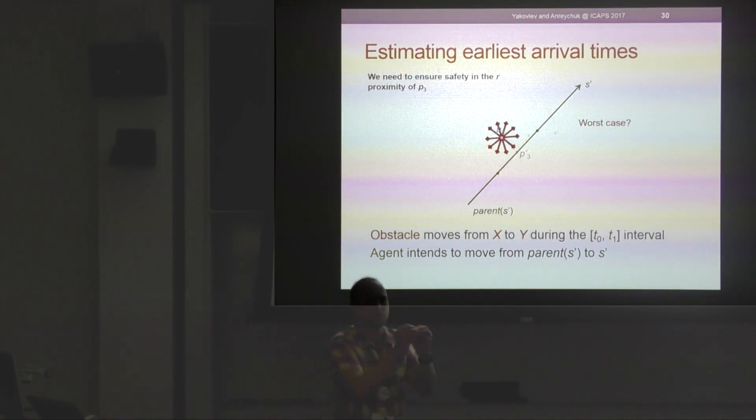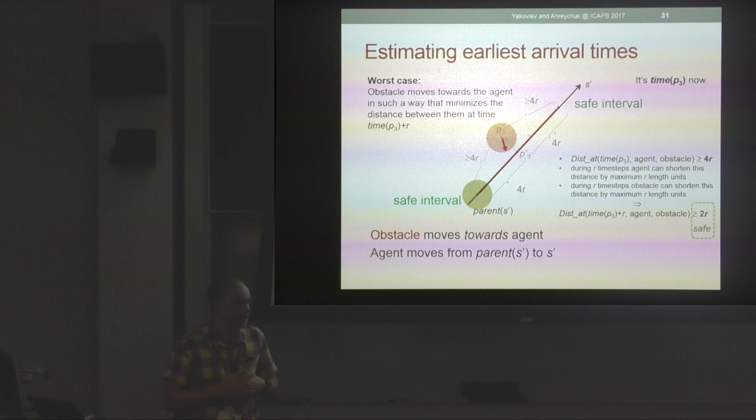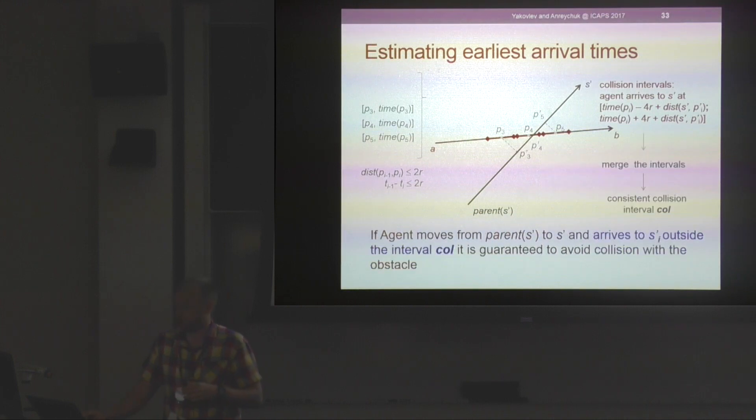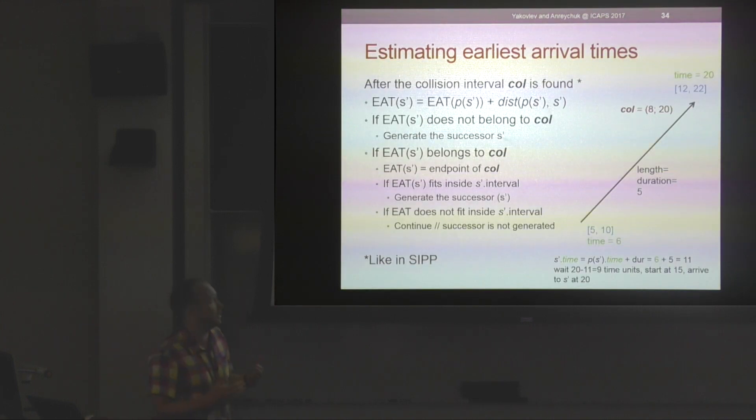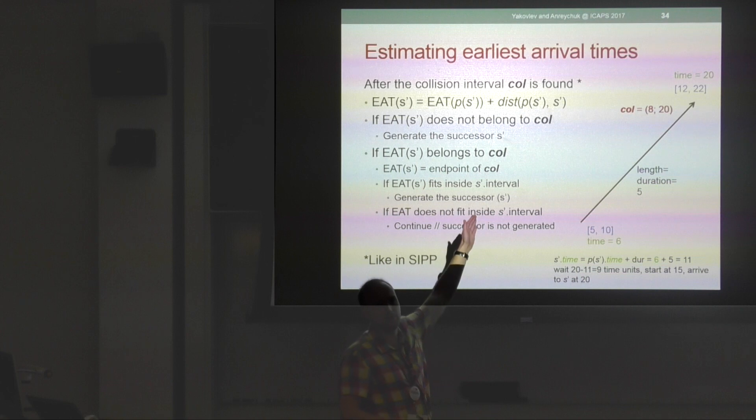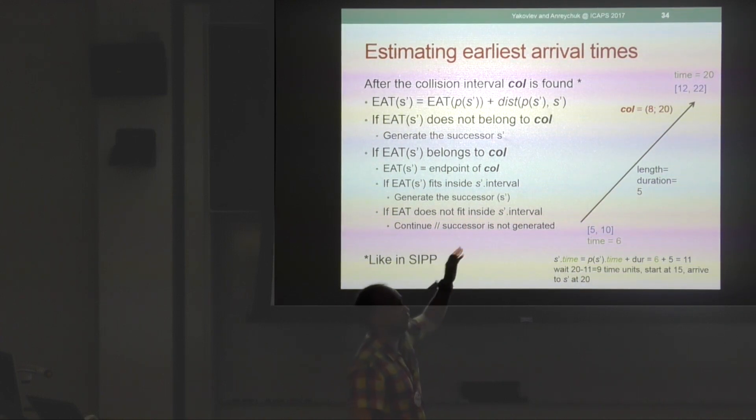We can do this for all constraint points, but obviously we want to guarantee that there would be no collision when the obstacle moves in between constraint points, right? So we need to guarantee safety in the R-proximity of each constraint point. Again, by just using some worst-case analysis and basic rules of geometry, we can infer that the conflict might happen only if an agent is 4R length units away from p-prime. We can again recalculate it with respect to the time intervals. Now we have the corresponding collision time intervals, and then we can merge them and get the consistent collision interval. When we have it, it's just a matter of a couple of if-then checks to see how it fits inside the safe interval which belongs to the endpoint of the move. It's done like in the way original SIPP would do.